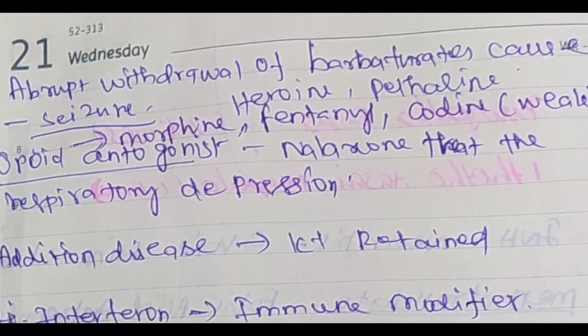Opioid antagonist — naloxone. Naloxone is used for respiratory depression. So opioids cause respiratory depression, and naloxone — the opioid antagonist — is used to treat it.